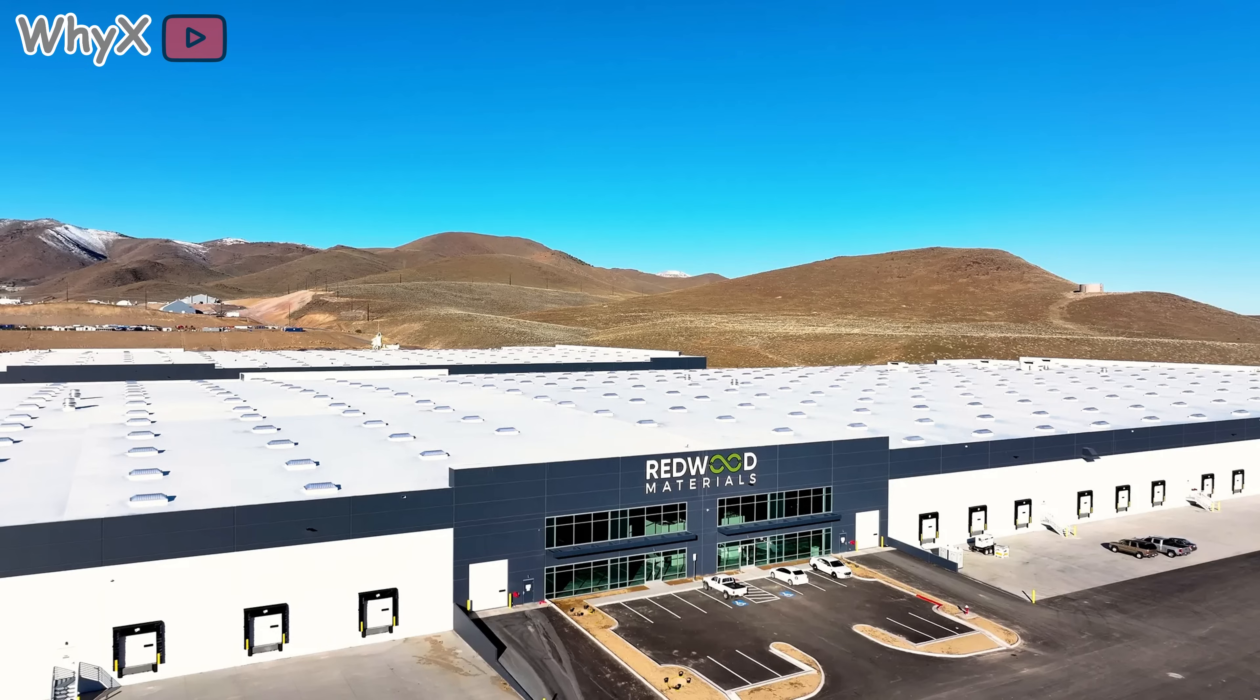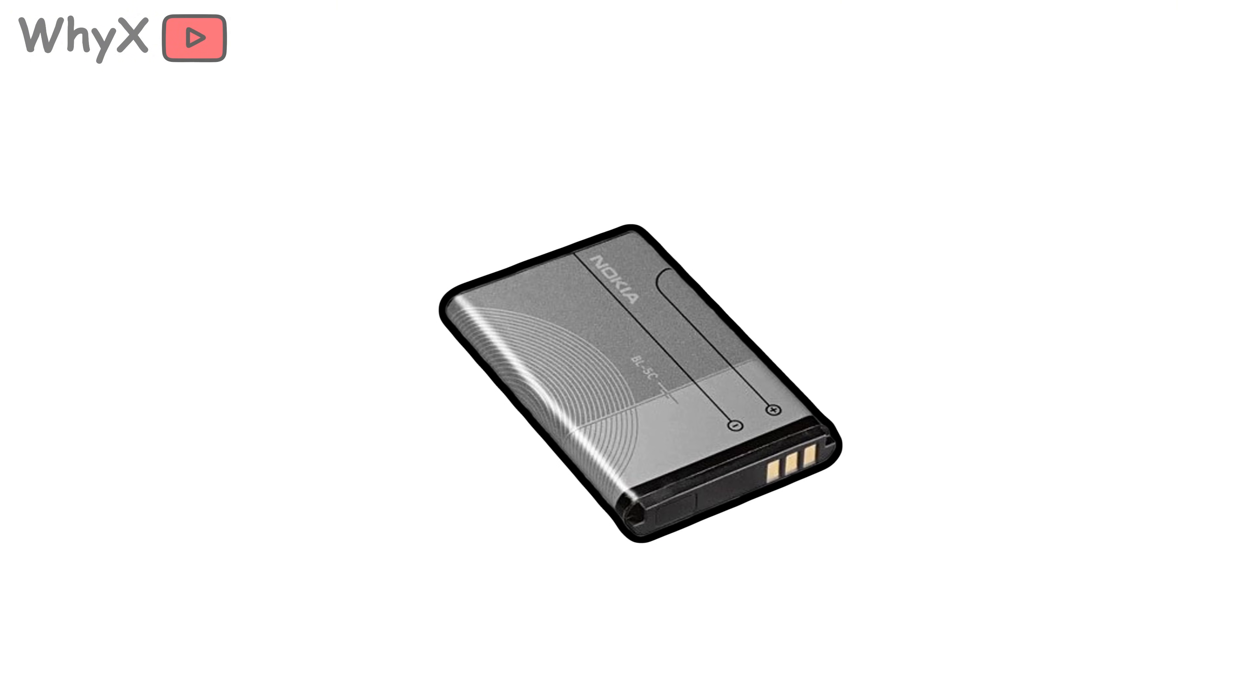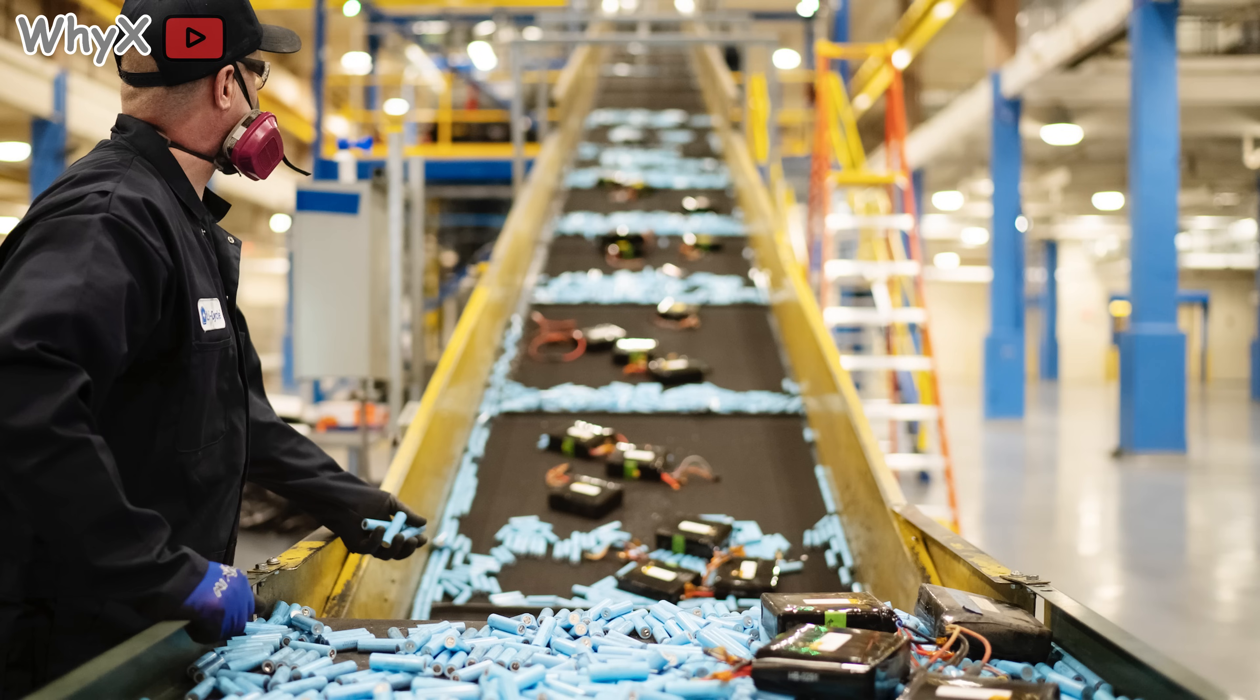Companies like Redwood Materials in the US are changing that. They are developing processes to pull metals out of old batteries and put them into new ones. Imagine your old phone's battery being reborn as part of a Tesla battery pack. It is cleaner, cheaper, and a whole lot less political drama.